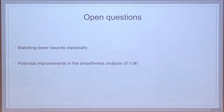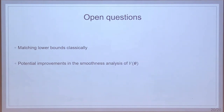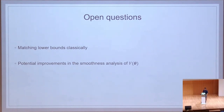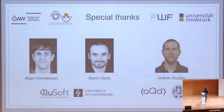That concludes our results. The remaining open questions are: first, we only compared our quantum algorithms to the best-known classical algorithms, so it would be nice to find matching lower bounds for those classical complexities — multivariate Monte Carlo estimation has matching lower bounds, and numerical gradient estimation may as well. Second, our smoothness analysis of the value function does not appear to be tight, and it would be nice to improve that. With this, I'd like to conclude my talk and thank my collaborators for this very nice work. Thank you.